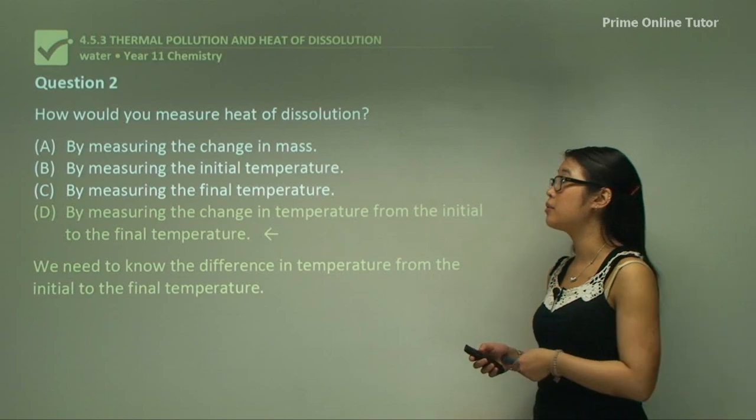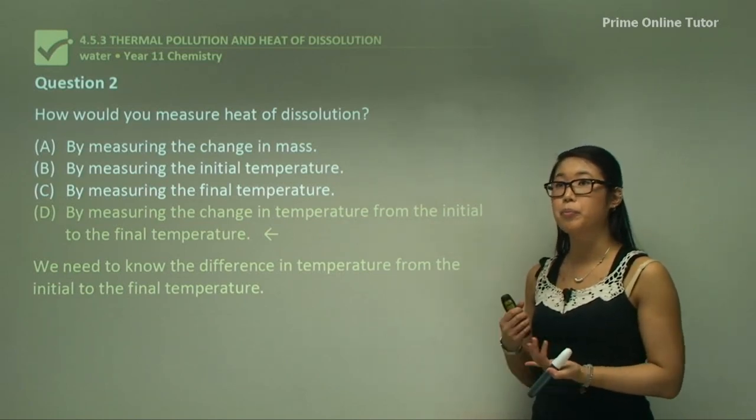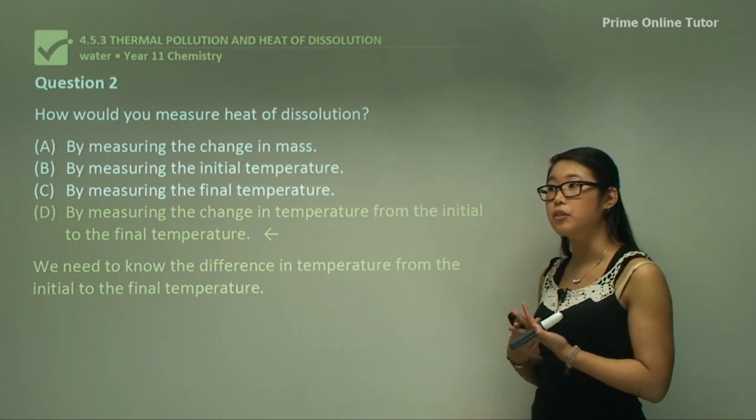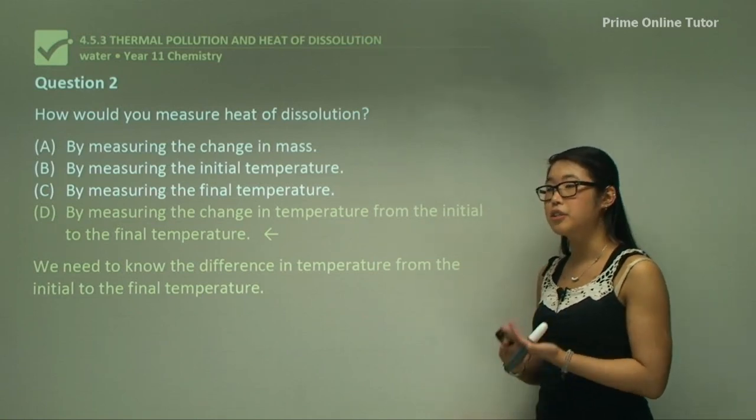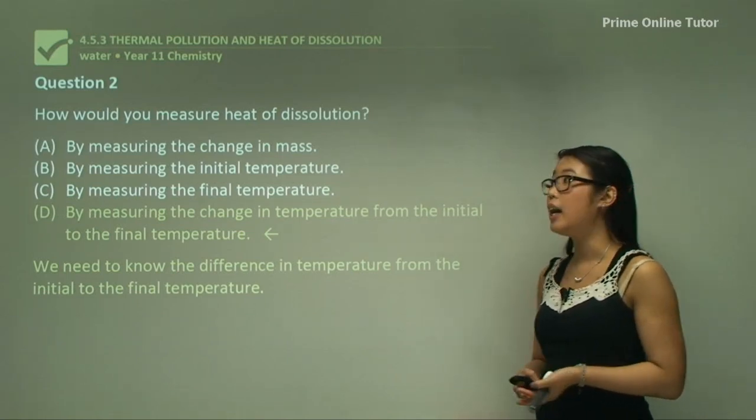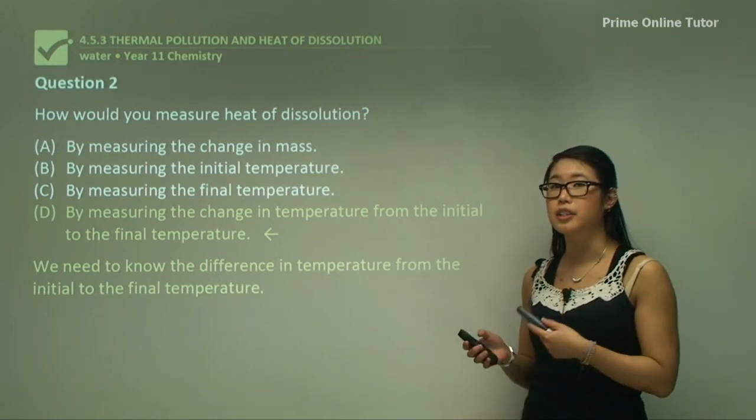So just to summarize, the method was: we have a known amount of liquid, we measure the temperature. We then add in a known amount of your solute, dissolve that in, mix it up, and then make sure you take the final temperature. Take the difference and then use the equations to calculate specific changes in enthalpy.